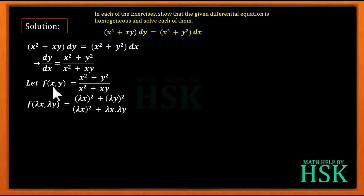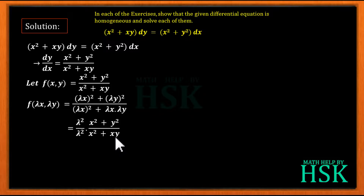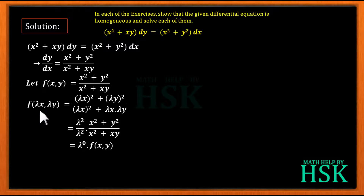To prove that this function is homogeneous, we replace x with λx and y with λy, where λ is a constant, and we calculate f(λx, λy). This gives (λx)² + (λy)² divided by (λx)² + (λx)(λy). On simplification, λ² is common in both numerator and denominator, so we get λ²/λ² times (x² + y²)/(x² + xy), which equals λ⁰ · f(x, y).